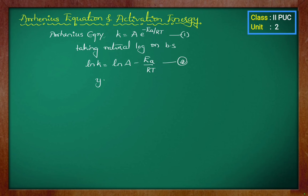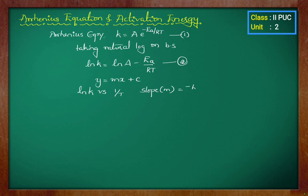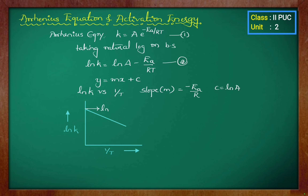Now, this equation is of the form y is equal to mx plus c, which is a straight line. When we plot a graph of ln k versus 1 by T, we will get a straight line. Here, m, that is the slope, will be equal to minus Ea by R, and the intercept c is ln A. For this graph, the intercept is ln A and the slope is minus Ea divided by R.